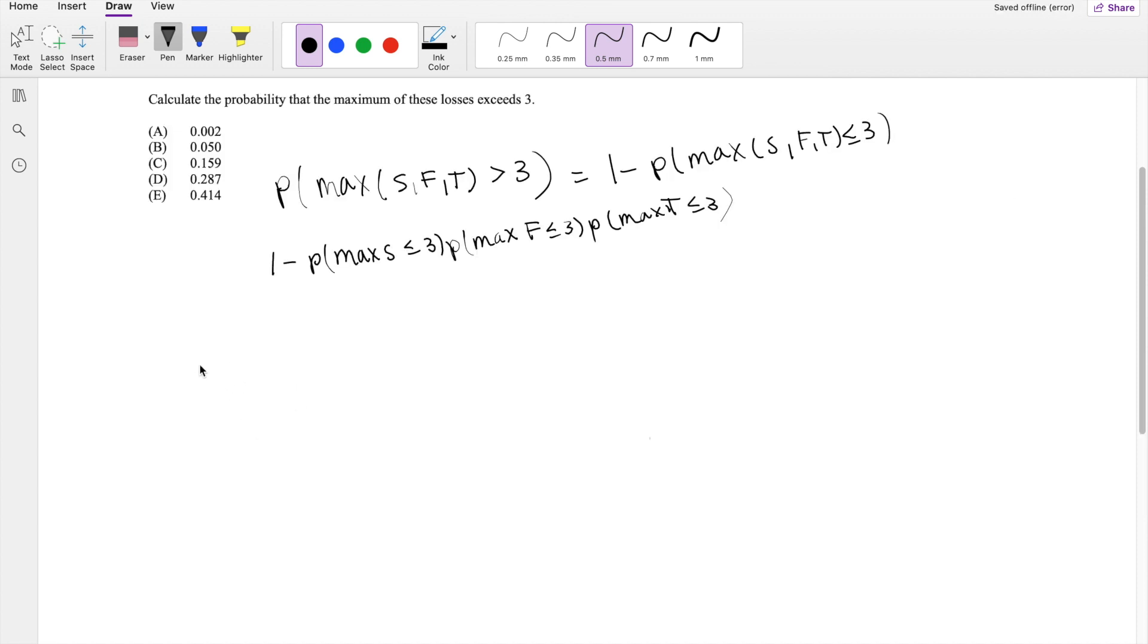So what we do know about order statistics is the probability of max of x1 to xn is less than some little x is equal to exactly just the probability that big X is less than or equal to little x to the nth power. And that's because we know this, but there is a proof of it.